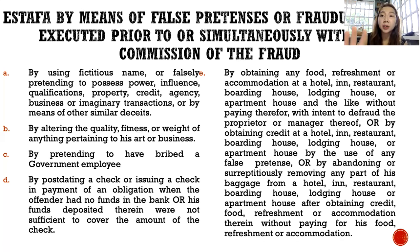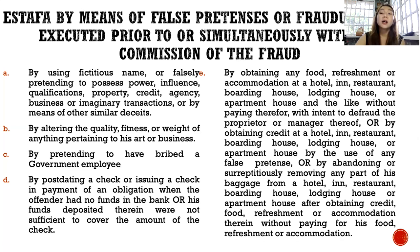The fifth punishable act is by obtaining any food, refreshment, or accommodation at a hotel, inn, restaurant, boarding house, lodging house, or apartment house and the like, without paying, with intent to defraud the proprietor or manager thereof; or by obtaining credit at such establishments by the use of any false pretense; or by abandoning or surreptitiously removing any part of one's baggage from such establishments after obtaining credit, food, refreshment, or accommodation therein, without paying.